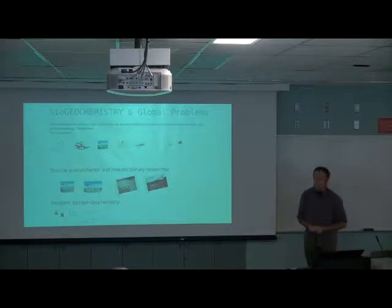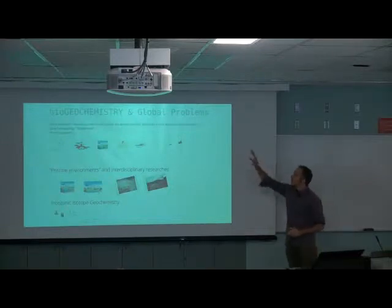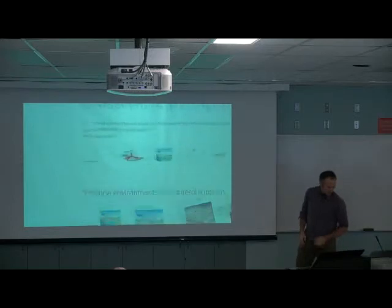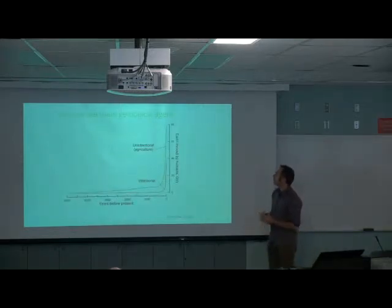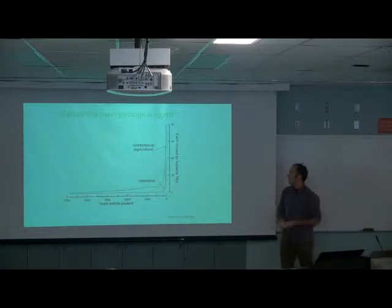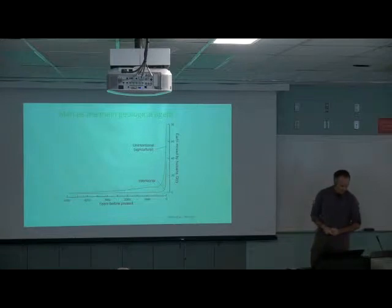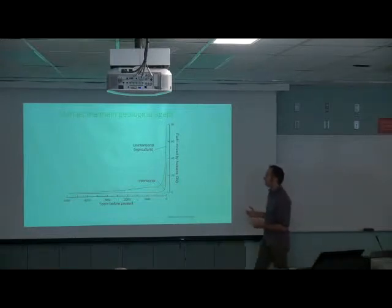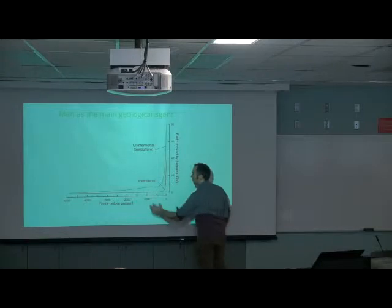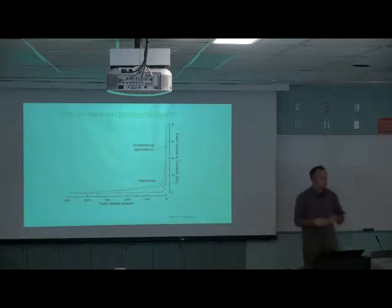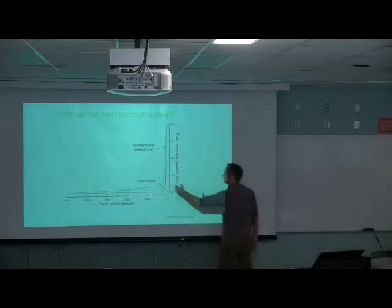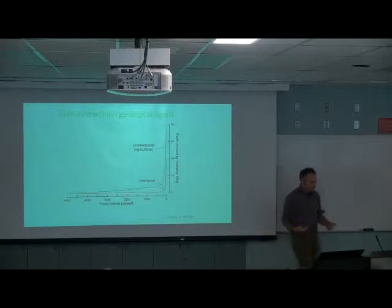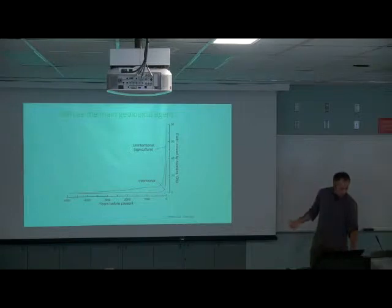You know that humans change a lot of their environment. Here's the earth moved by humans in gigatons per year in a paper published by Hooke in Geology. You can see that since the Neolithic, since the agricultural revolution, humans have a major influence on the environment, and especially since the last two or three hundred years because of oil and coal combustion and the energy produced.